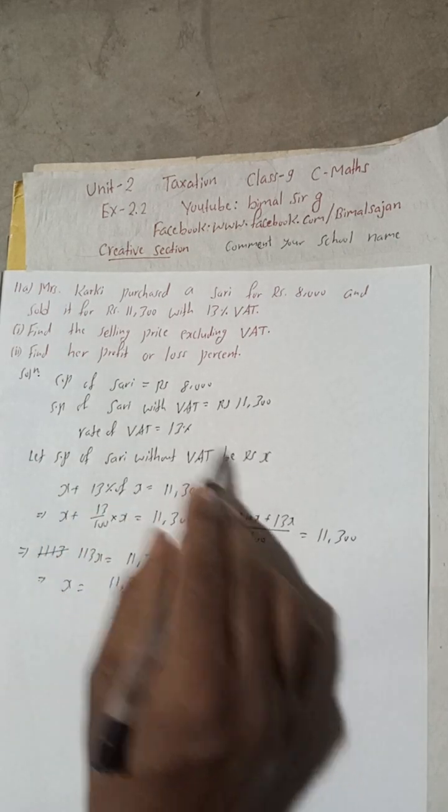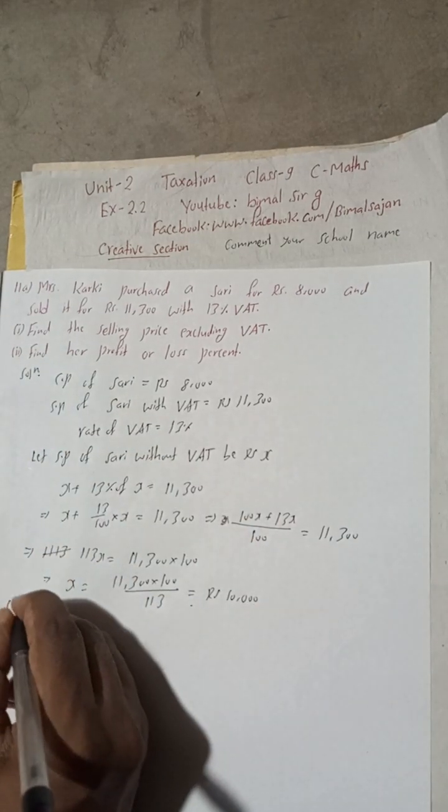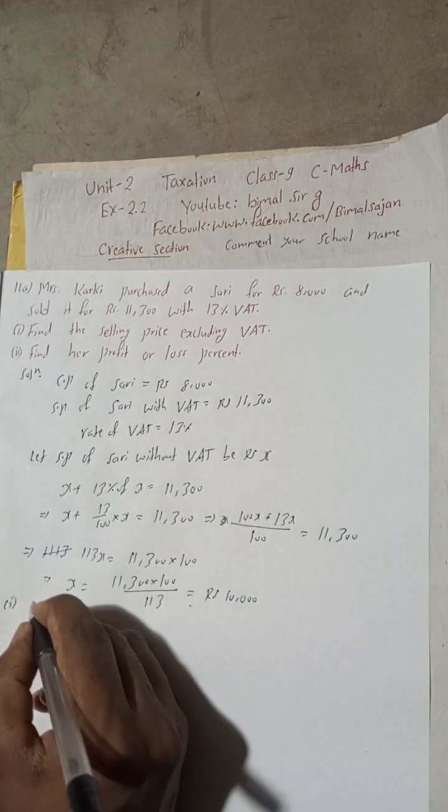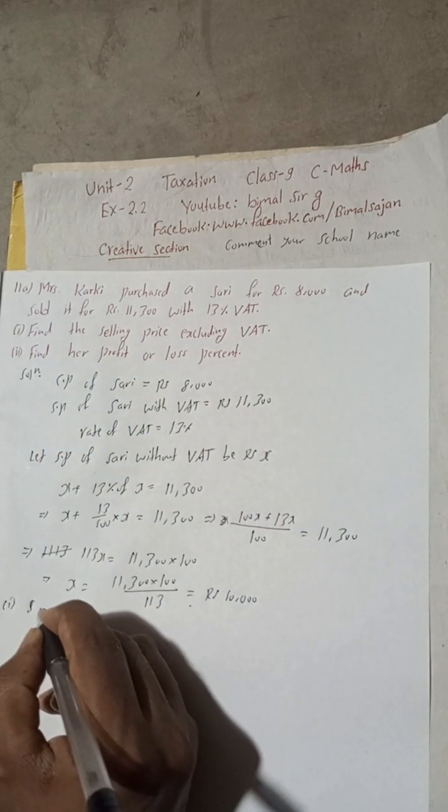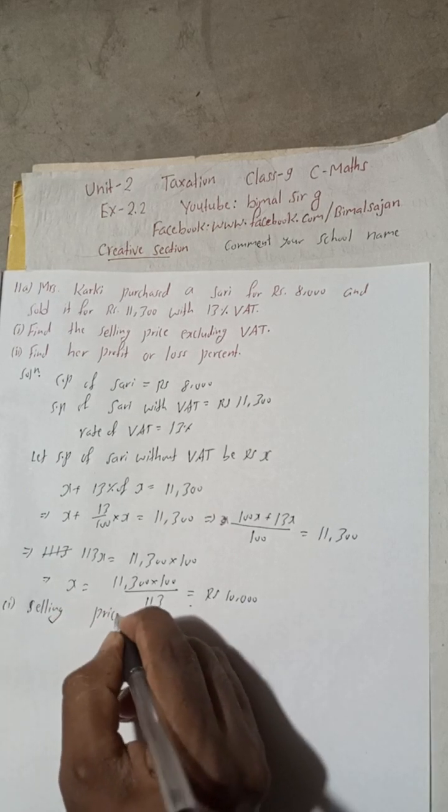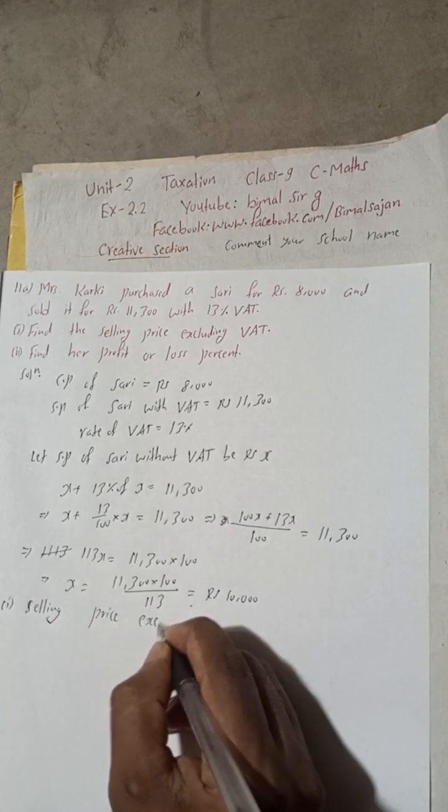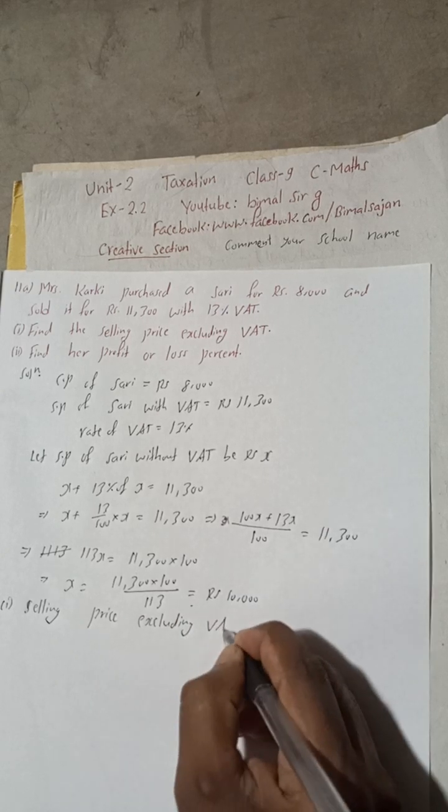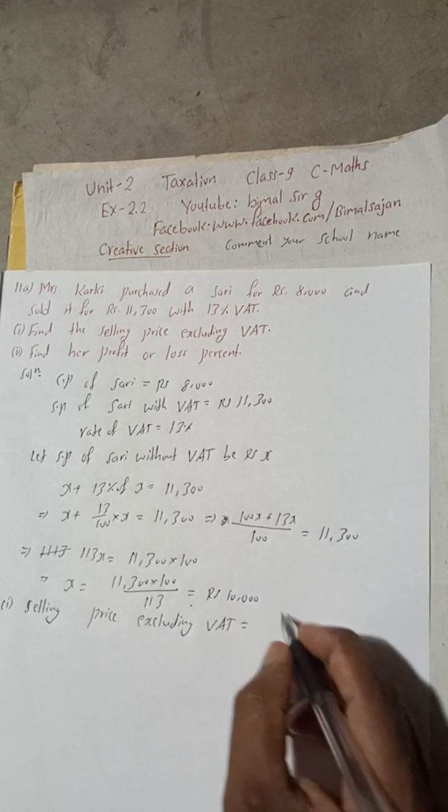Now this x is SP of sari without VAT. So this is number one answer. This is the selling price excluding VAT. Therefore, selling price excluding VAT is equal to Rs. 10,000.